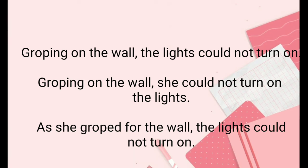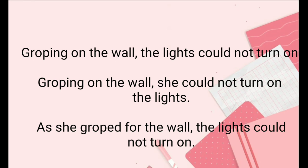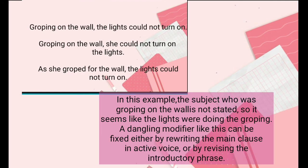Groping on the wall, the lights could not turn on. Groping on the wall, she could not turn on the lights. As she groped for the wall, the lights could not turn on. In this example, the subject who was groping on the wall is not stated, so it seems like the lights were doing the groping.